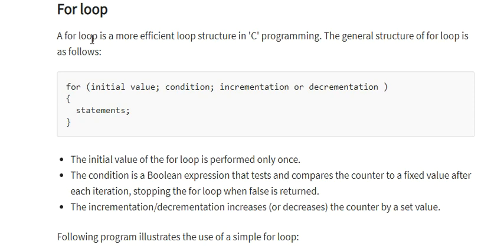Whenever we use the for loop, we should know the start point and end point. The general syntax is: for (initial value; condition; increment or decrement). The initial value is the starting point, the condition is used to break the loop — for example, starting at one and ending at five with condition less than five. Increment increases the value by one; decrement decreases the value by one.